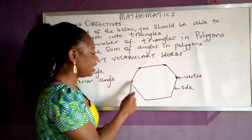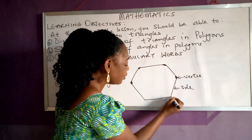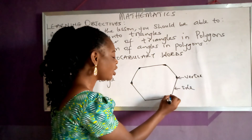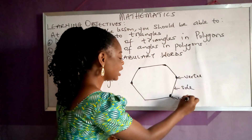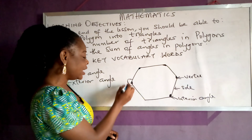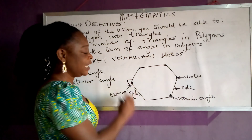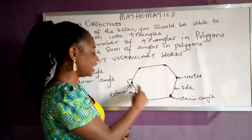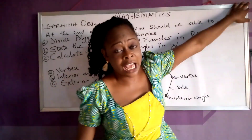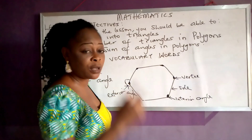This is the vertex, this is the vertex, this is the vertex — and so on for each corner. The angle inside is called interior angles; we call this one interior. And the angle outside is what we call an exterior angle. So if you are asked to find the interior angle, you should know they are referring to the angles inside. The plural of vertex is vertices — if there is more than one, we call them vertices, but one is vertex.